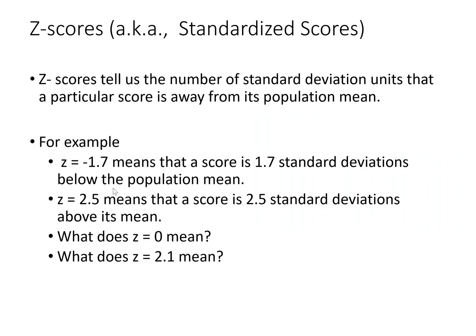Z-scores tell us the number of standard deviation units that a particular score is away from its population mean. A z-score of -1.7 means that score is 1.7 standard deviations below its population mean. A z-score of 2.5 means that score is 2.5 standard deviations above its population mean. A z-score of 0 means it is right on its population mean.